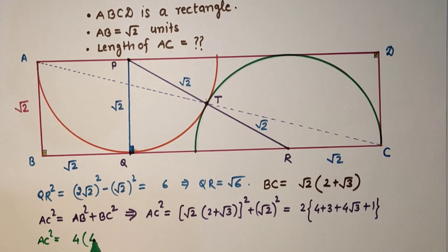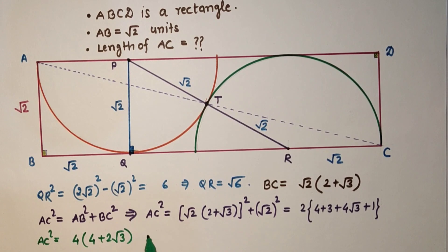So we will get AC as the square root of this, which is 2 times the square root of 2 plus root 3.